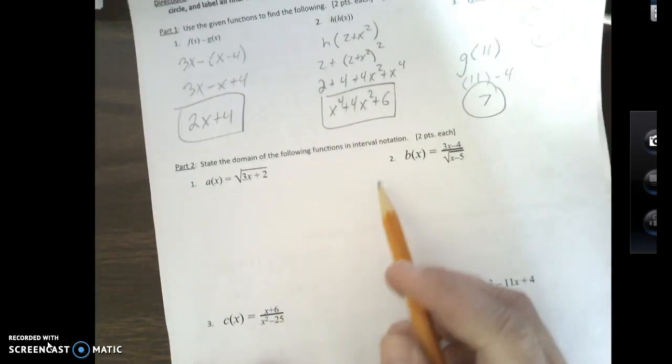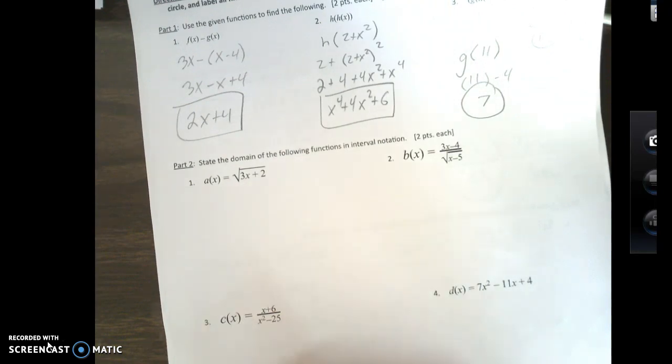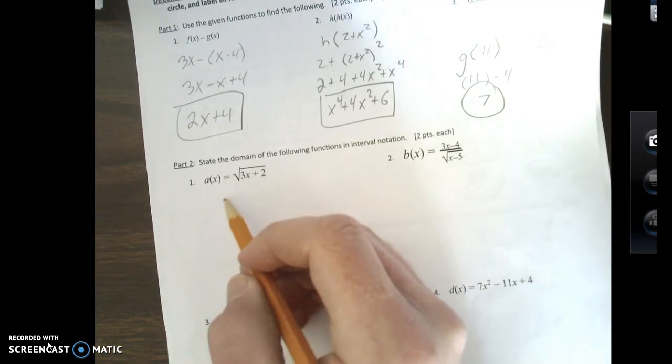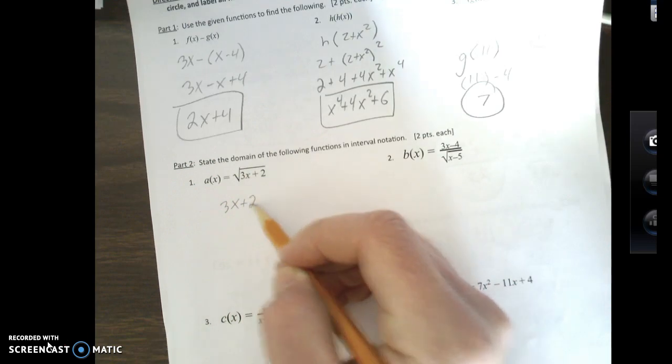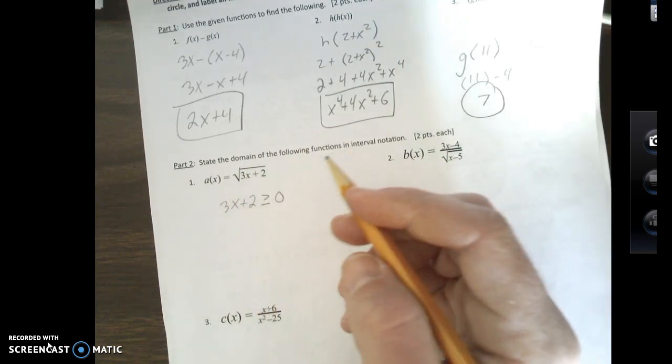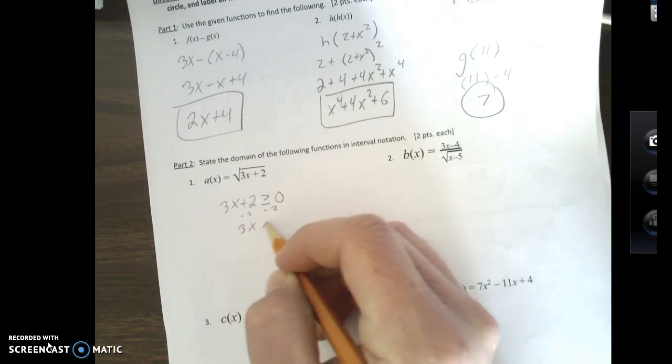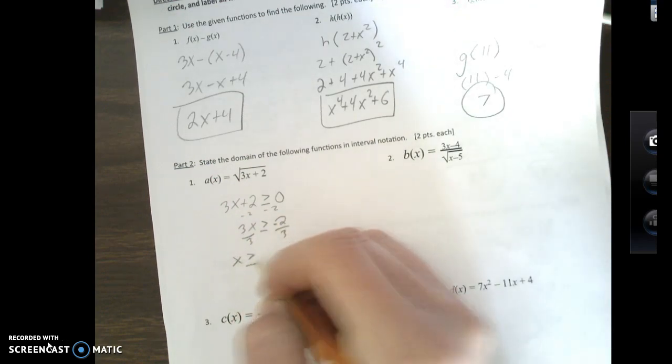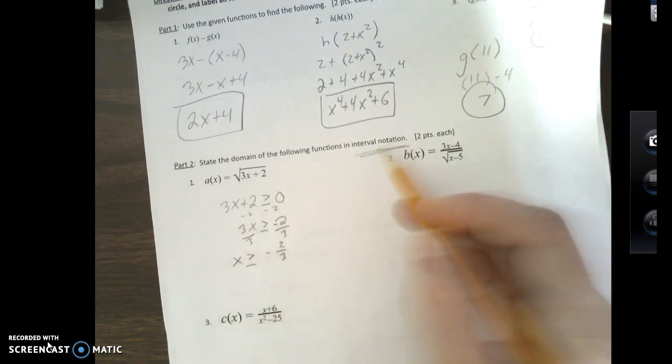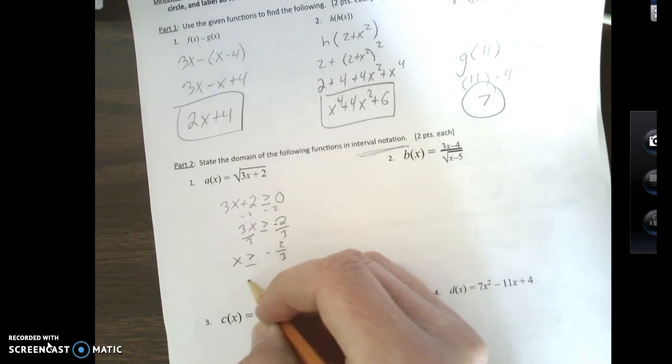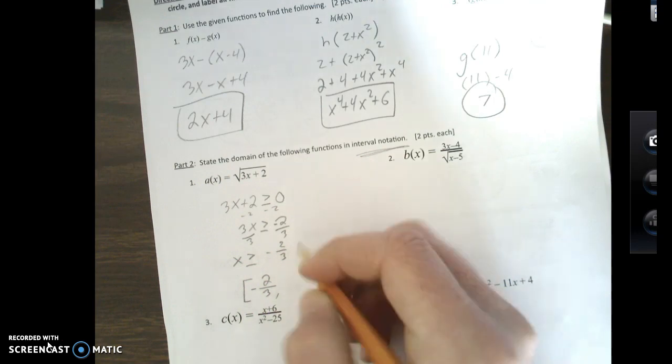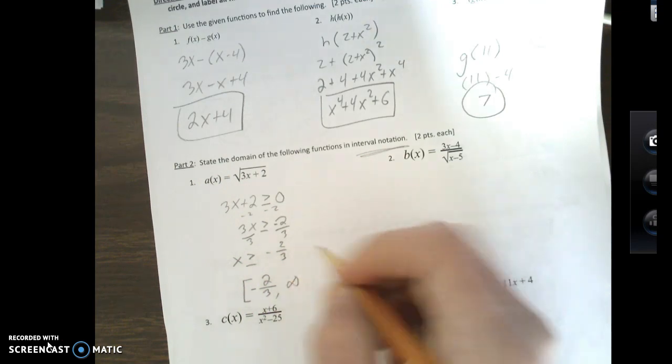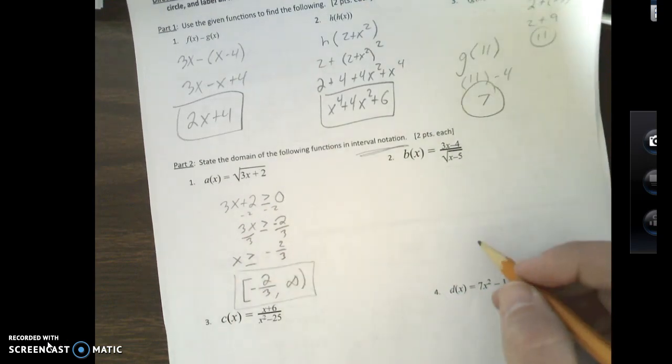Alright. Domain. Alright, you have two questions that you ask yourself for every single one of these. Do I have an even-powered root? And do I have an x-denominator? So, for this first one, do I have an even-powered root? I do. So, if you have an even-powered root, you take what's under the square root, or whatever root power it is, you make it greater than or equal to 0. I'm going to solve this. Subtract 2. Subtract 2. Okay. Negative 2. Divide by 3. Divide by 3. x is greater than or equal to negative 2 thirds. Now, we want to use interval notation. So, since it's greater than or equal to, I'm going to use bracket negative 2 over 3, comma, this can go all the way to infinity, and we use a parenthesis for it. Okay? And then you're all good.